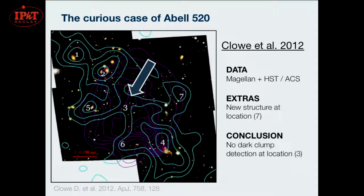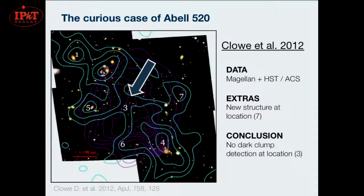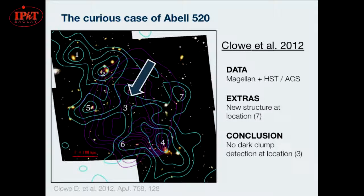Some years later, Clo et al. in 2012 looked again at this using Magellan data, which is ground-based, combined with HST — Hubble Space Telescope data. Their mass map is the green teal color, and in the background in purple is the x-ray emission. Basically they say they see some of the same structures that were seen before, but they don't see anything in that dark core position — they don't detect a dark core.